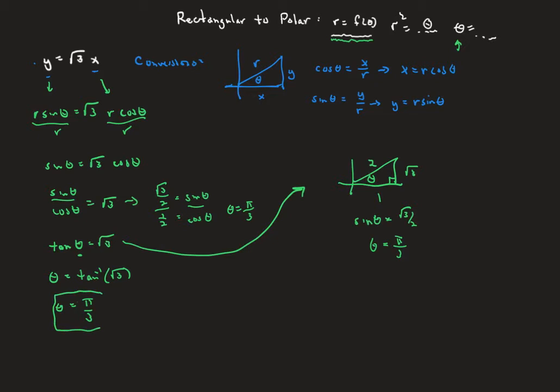Theta equals pi over three is our polar equation. We have converted an equation that started in rectangular form with y's and x's into something that has r's and thetas but not x's and y's. That's one example — let me do another one.